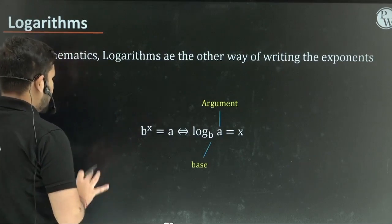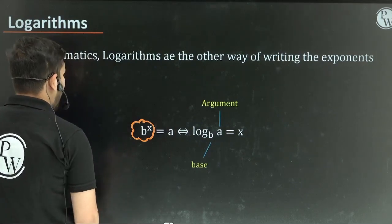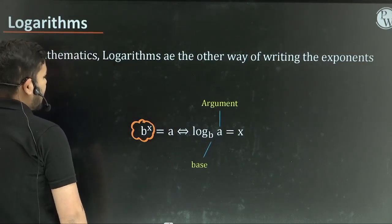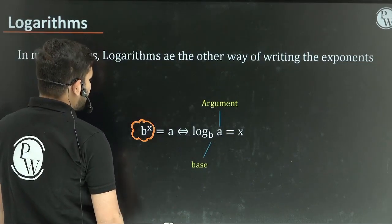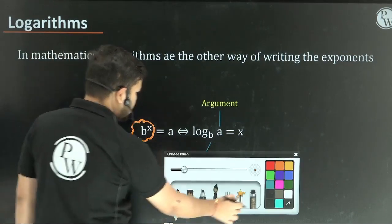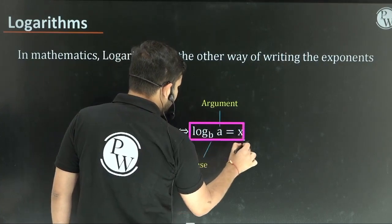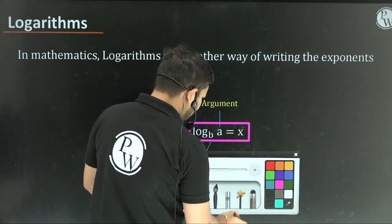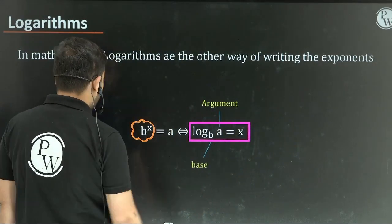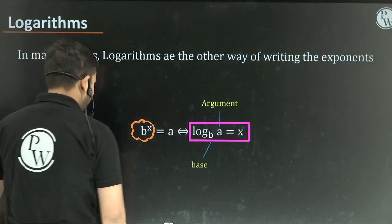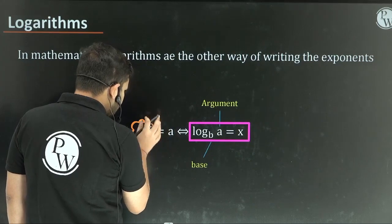So basically we have b to the power of x equals a. This is called b to the power of x, or b exponent x. Let us try to represent it in logarithm form. In logarithm, we have the base and the exponent. Pay attention — this is a crucial point. You can see here: b to the power of x equals a.